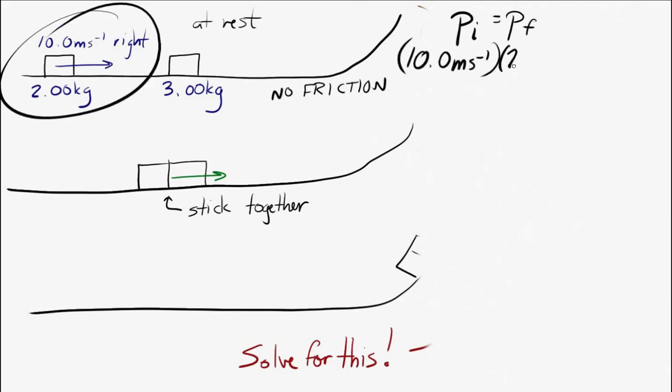And that has to equal the momentum at the end. And at the end, well, let's see, we have the two blocks are combined for a total mass of 5 kilograms. And so we can figure out how fast the blocks are moving immediately after the collision.